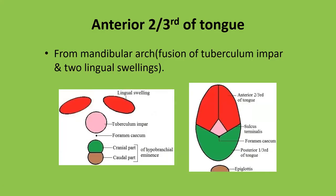The development of the anterior two-thirds of the tongue is from the mandibular arch. The anterior two-thirds of the tongue is formed by fusion of the tuberculum impar with the two lingual swellings. You can correlate with this diagram how the red color and pink color — the two lingual swellings and tuberculum impar — unite to form the anterior two-thirds of the tongue. The foramen cecum and sulcus terminalis are visible, with the sulcus terminalis separating the anterior two-thirds from the posterior one-third.